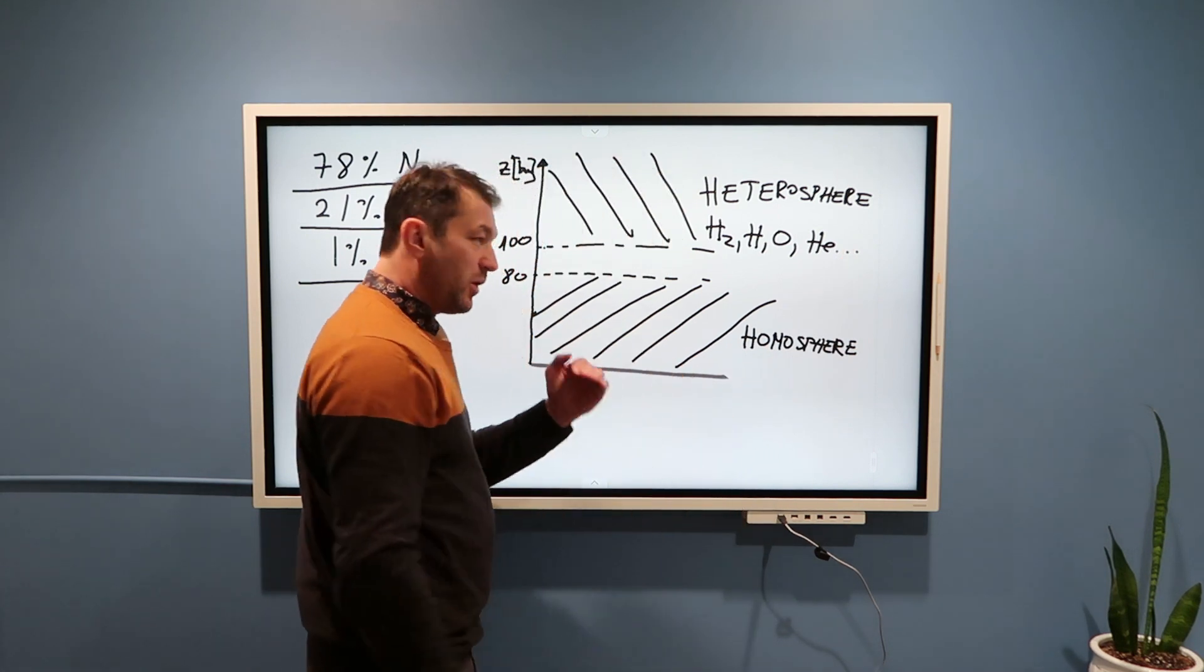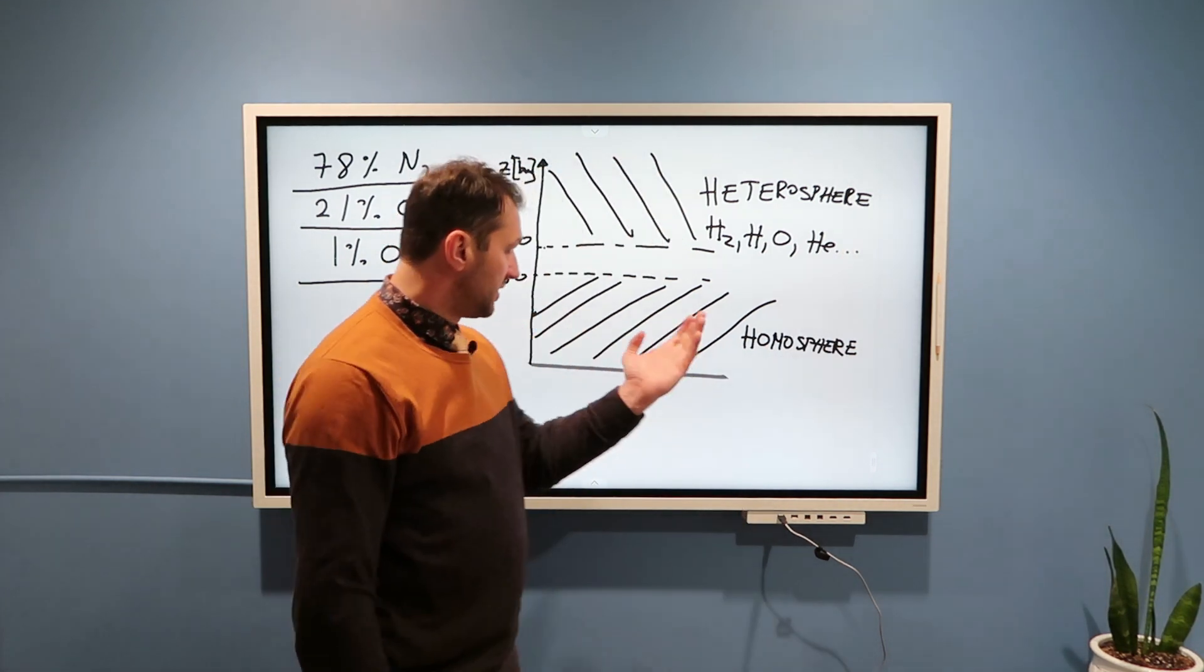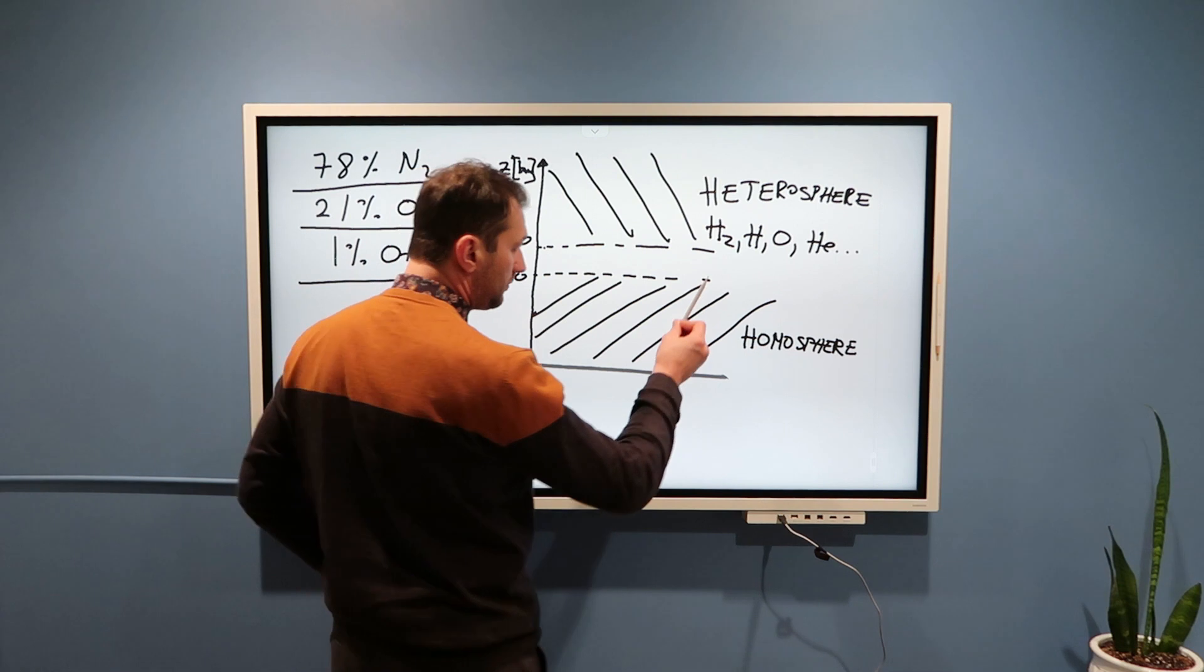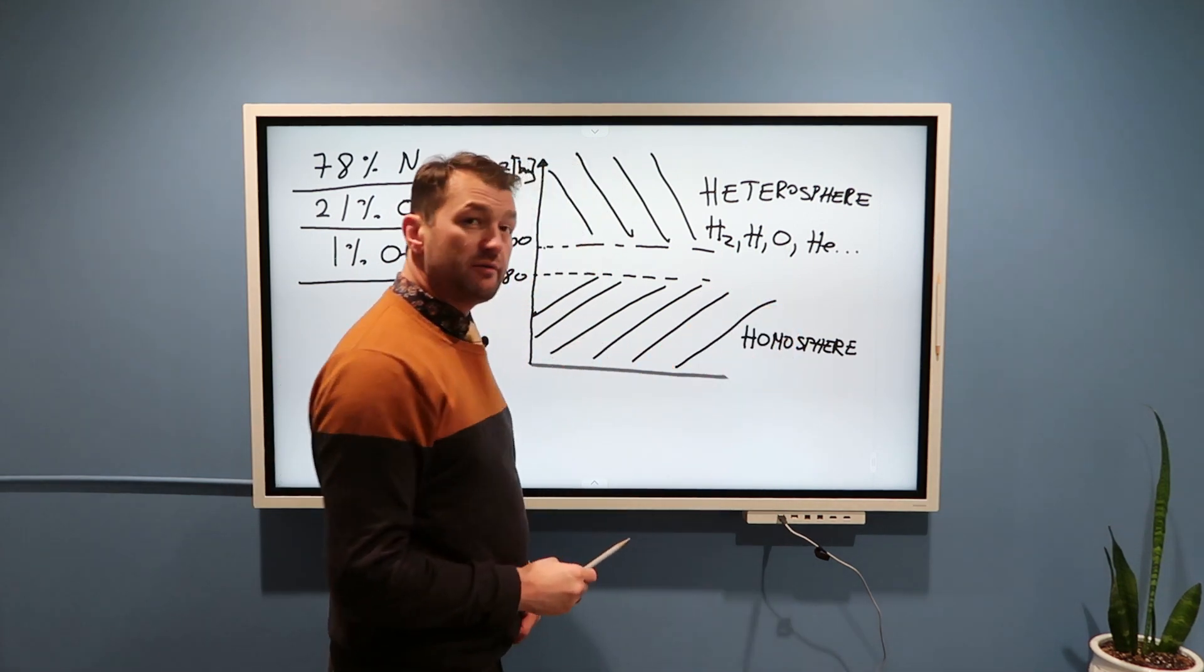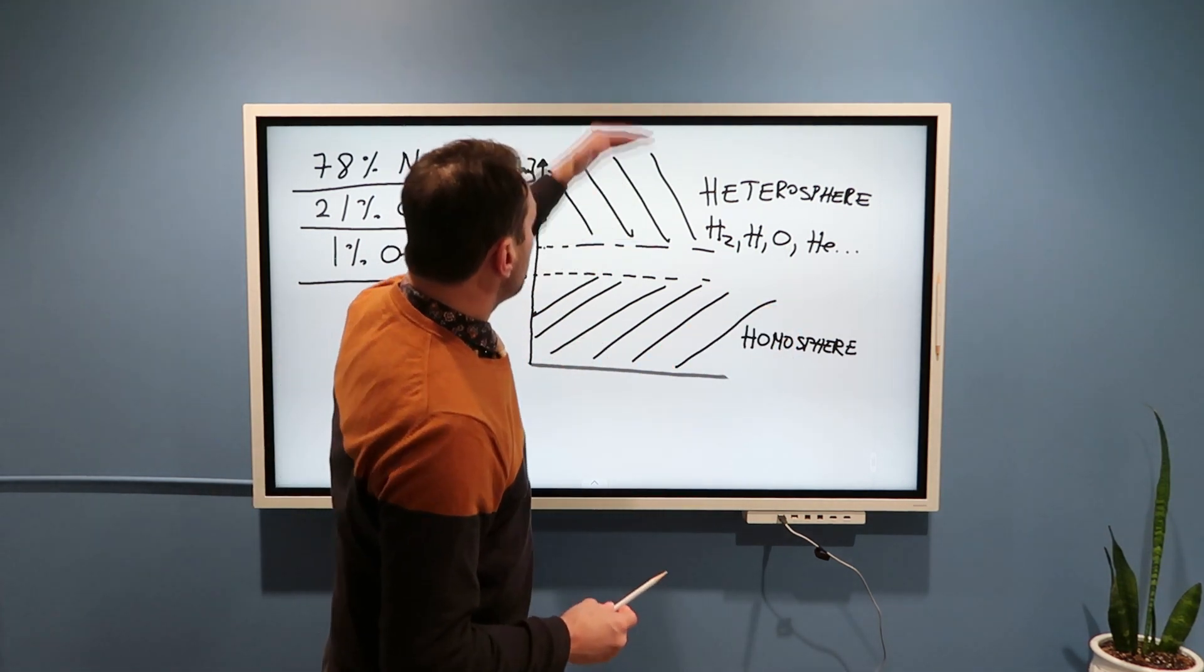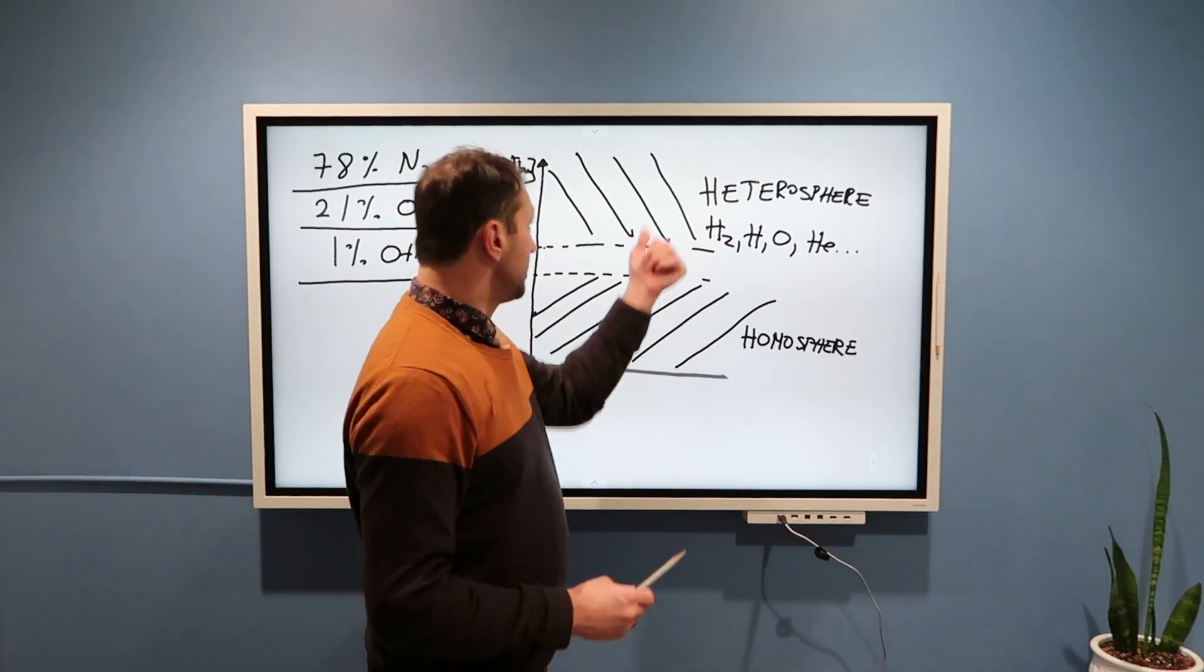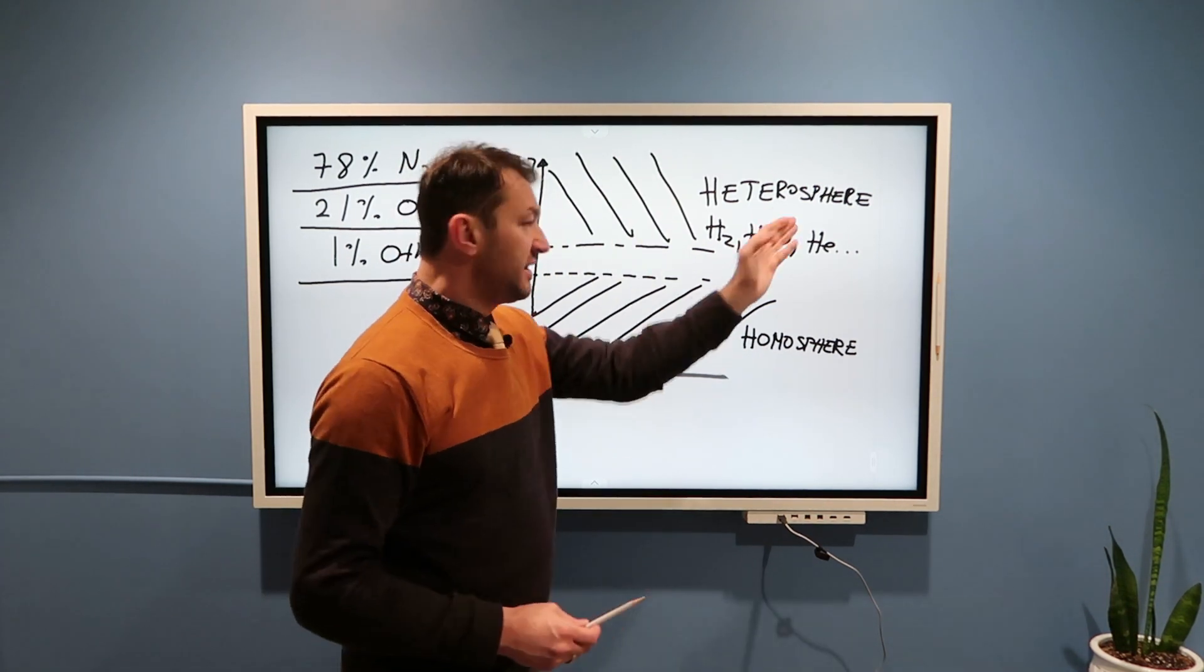And what is also very important to understand is that these percentages, whatever they are, are not constant along the altitude in the heterosphere. For example...